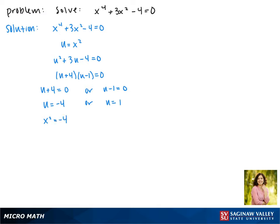So we get x squared equals negative 4. This means that x equals plus or minus the square root of negative 4. So that is an extraneous solution.